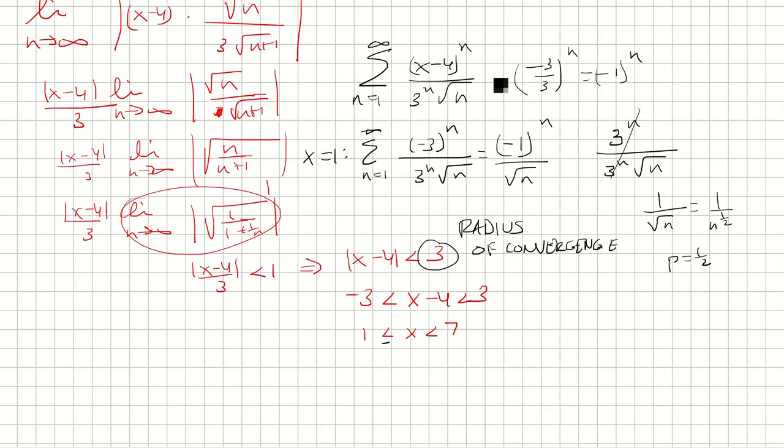So we don't include the 7, we only include the 1. So that will be the interval of convergence: 1 to 7, including 1 but not 7.